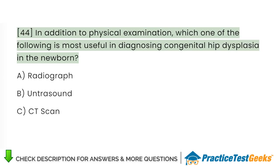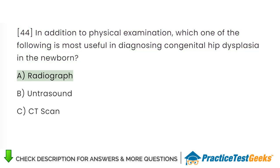In addition to physical examination, which one of the following is most useful in diagnosing congenital hip dysplasia in the newborn? A. Radiograph. B. Ultrasound. C. CT scan.